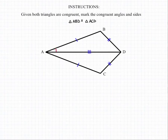The angles will work the same way. Angle BAD is congruent to angle CAD, angle B is congruent to angle C, and angle ADB is congruent to angle ADC, and that will be our final answer.